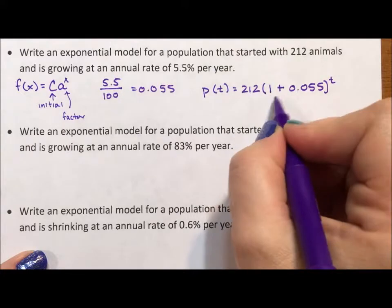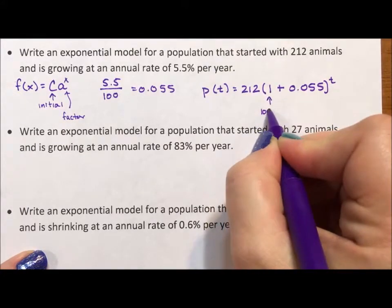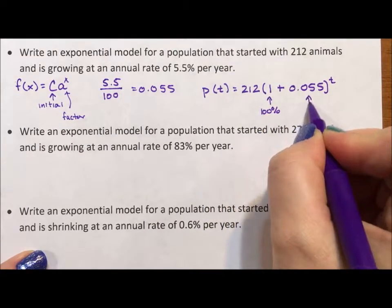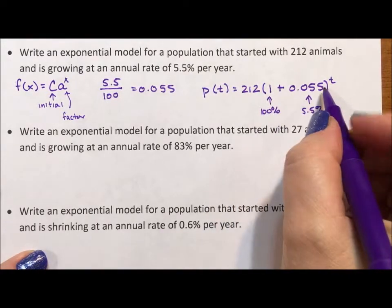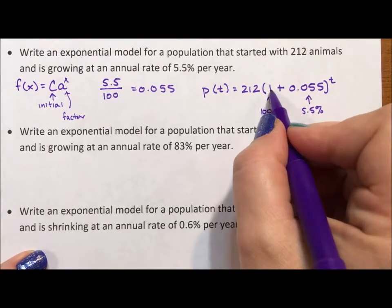The 1 is because 1 is 100% of the population, and it's growing by 5.5 percent. So we use 1 because we're adding the new percent to the original 100.